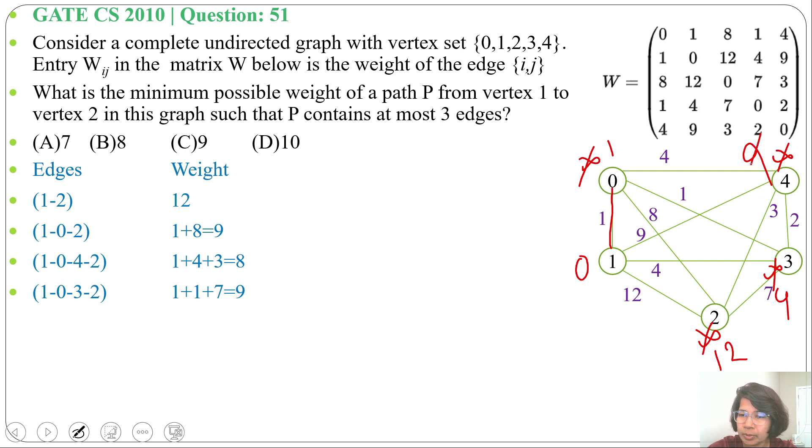Next we will relax all the vertices which are adjacent to 0. This cost will be 1 plus 4, 5. And now this cost will be 1 plus 1, 2. And cost of vertex 2 will be 1 plus 8, it will be 9.